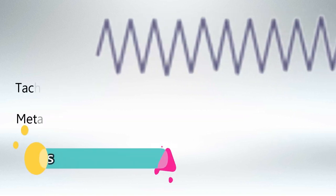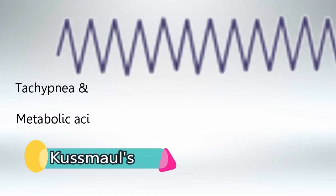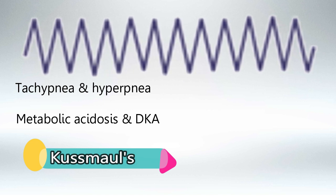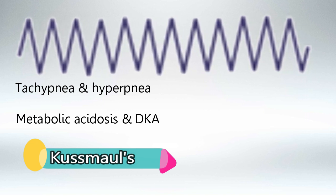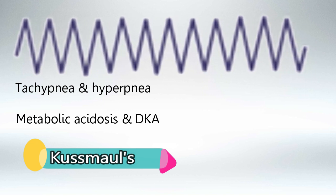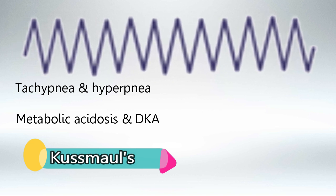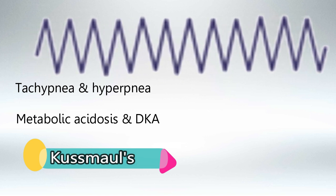And finally is Kussmaul's pattern, which is rapid respiratory rate with deep breaths. We see this in metabolic acidosis and diabetic ketoacidosis. It makes sense because rapid breaths will expel carbon dioxide and decrease the acidity of the blood.